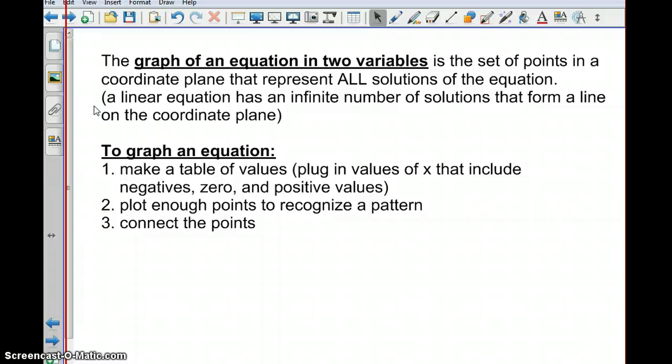So the way we're going to talk about graphing these is using a table. So what you want to do is you want to make a table of values, and you're going to just choose random numbers to plug in for x. You want to generally choose negative values and zero value, and then some positive values as well. So you'll plug those in for x. You'll see what you get for y. So then you'll have pairings of x and y. And you plot those points until you notice a pattern. And once you notice a pattern, you connect the points. And you are going to get a line with these types of equations we're working on.